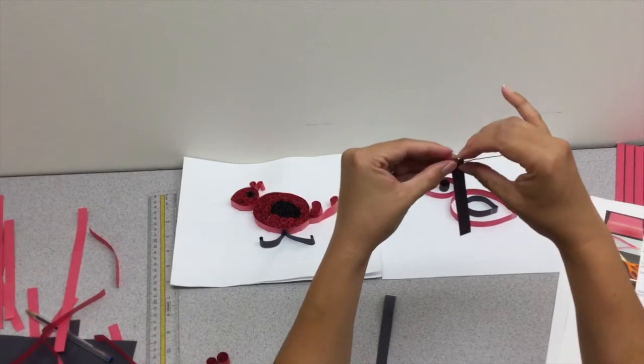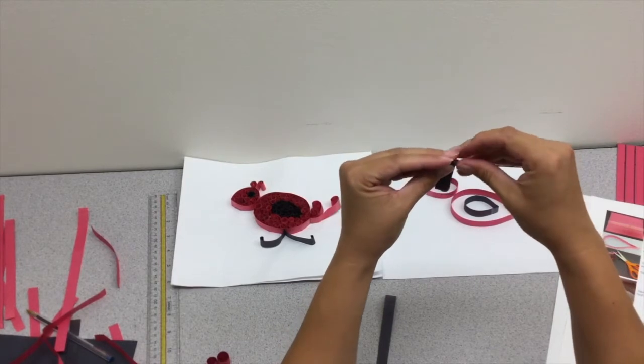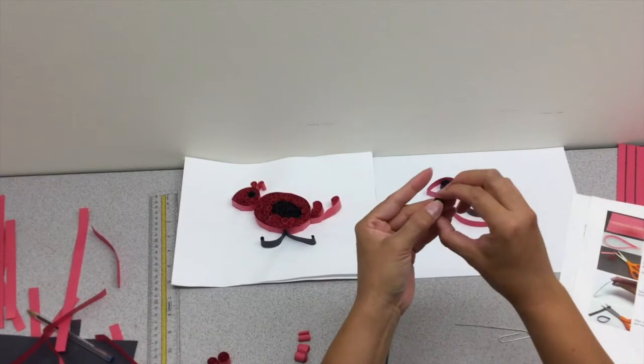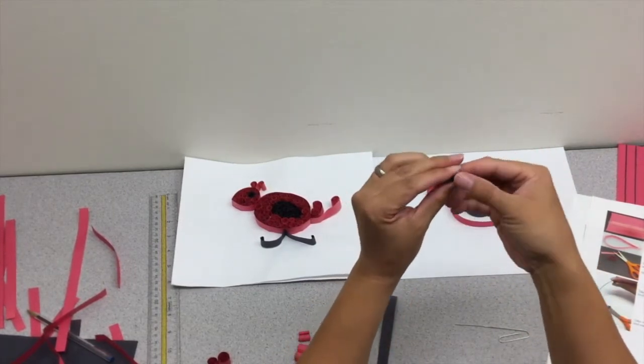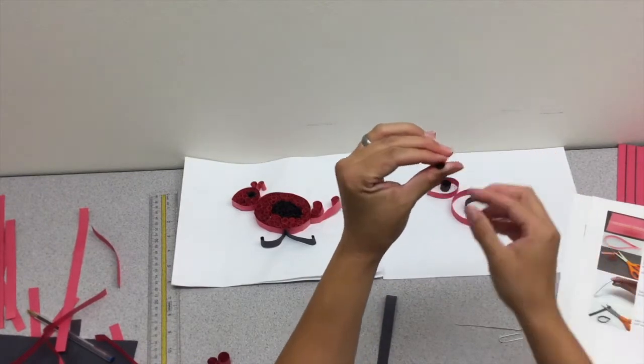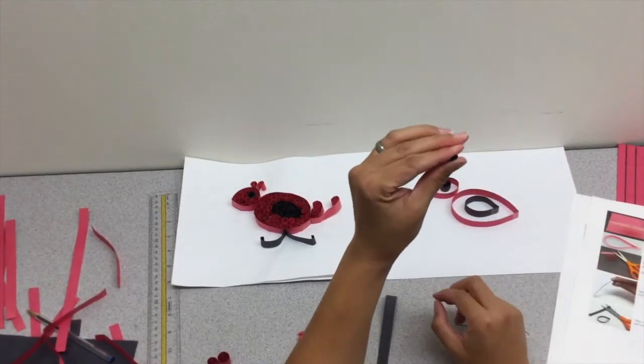Wind it all the way up like so. Once the paper is wound on itself, take it off the paper clip and use your fingers to rub